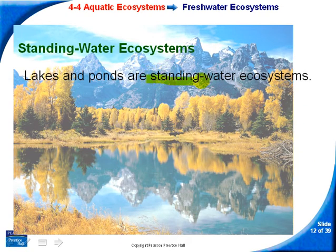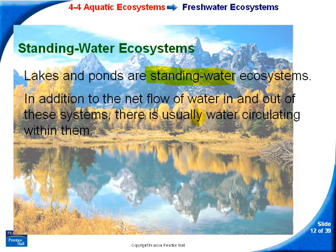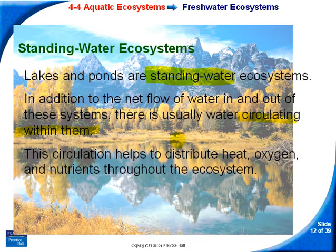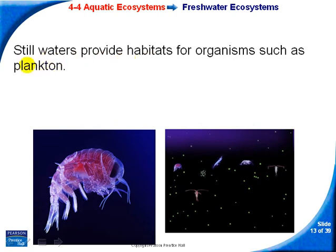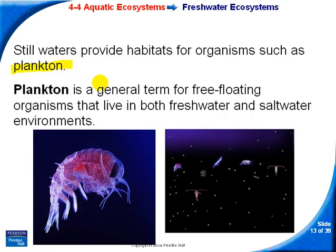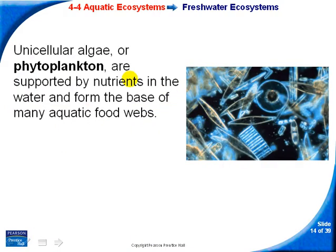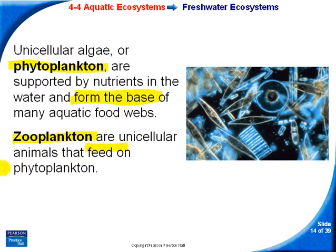Lakes and ponds are standing water ecosystems. Water circulates inside the pond, which helps distribute heat, oxygen, and nutrients throughout the ecosystem. In still water you can find plankton — a general term for free-floating organisms found in both fresh and salt water. Phytoplankton form the base of these food webs, and zooplankton feed on the phytoplankton.